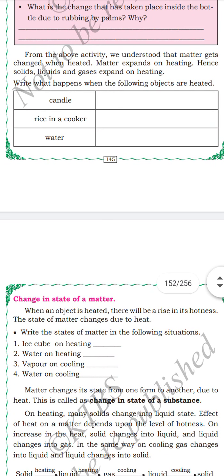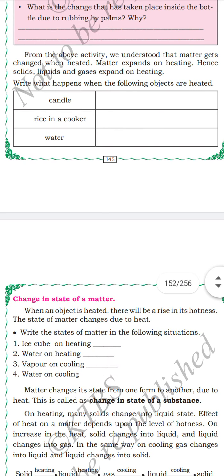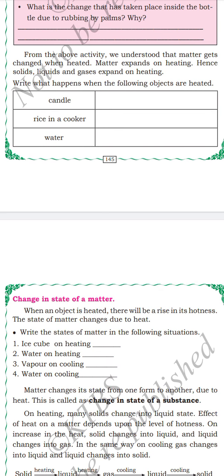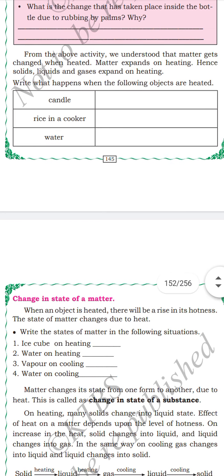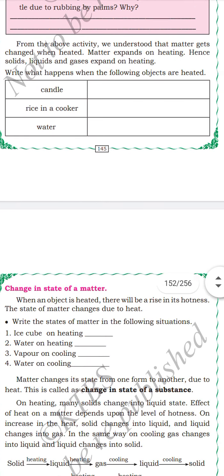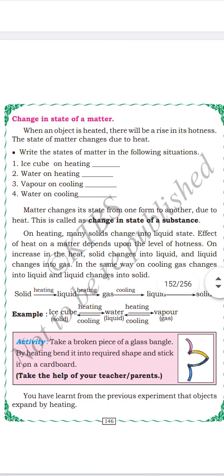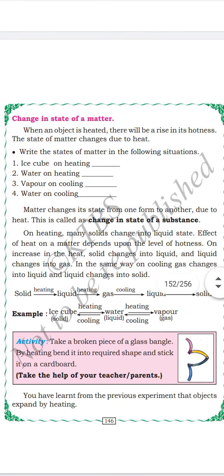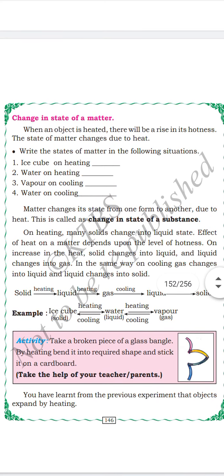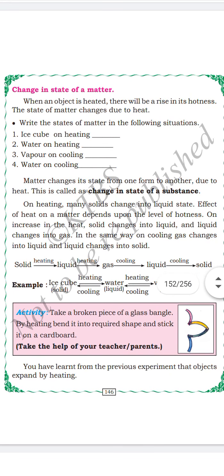Effect of heat on matter depends upon the level of hotness. On increasing the heat, solid changes to liquid and liquid changes into gas. In the same way, on cooling, gas changes to liquid and liquid changes into solid. Solid on heating changes to liquid. Liquid on heating will become gas. Gas on cooling will become liquid. Liquid on cooling will become solid.